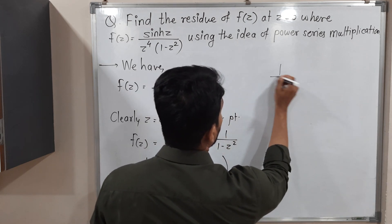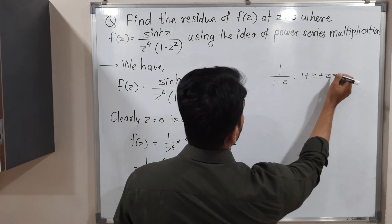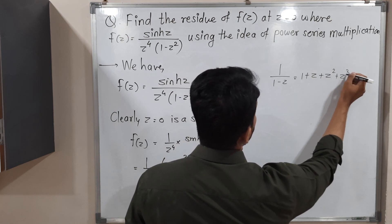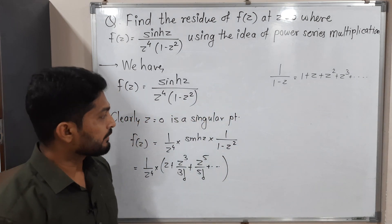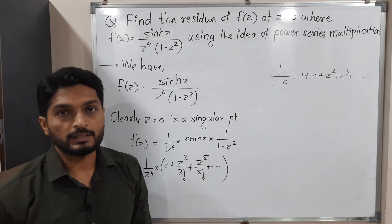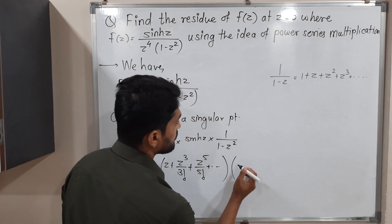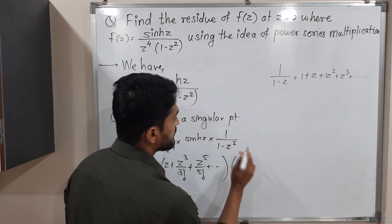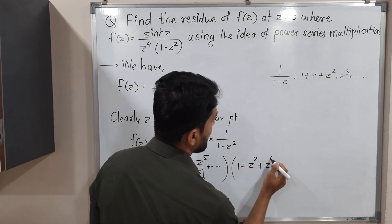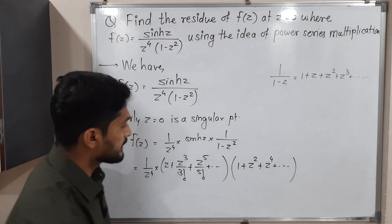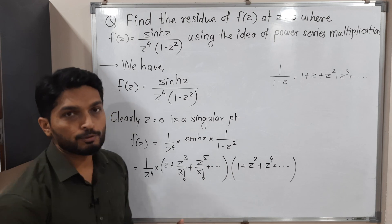There is one series for 1 over (1 minus z) which is 1 plus z plus z² plus z³ and so on. We are familiar with this series. The difference here is that in place of z we have z². So I will use this series to find 1 over (1 minus z²): it is 1 plus z² plus z⁴ and so on. This is the second series we have, and we have a multiplication between them.